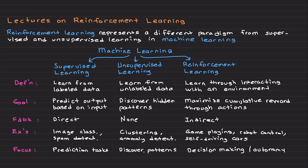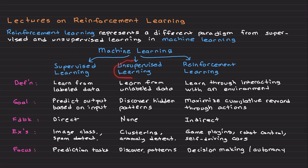Welcome back. I am very happy to introduce a new lecture series on reinforcement learning. Reinforcement learning is a type of machine learning. Machine learning has three types of strategies: supervised, unsupervised, and reinforcement learning.